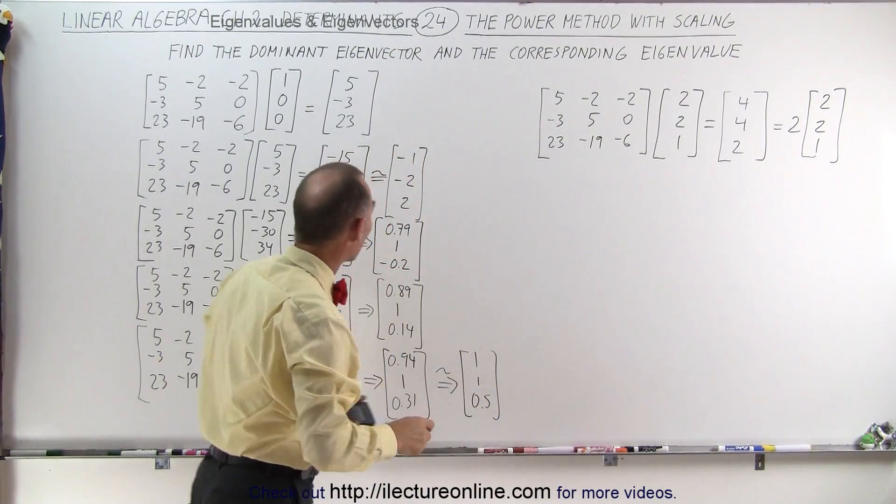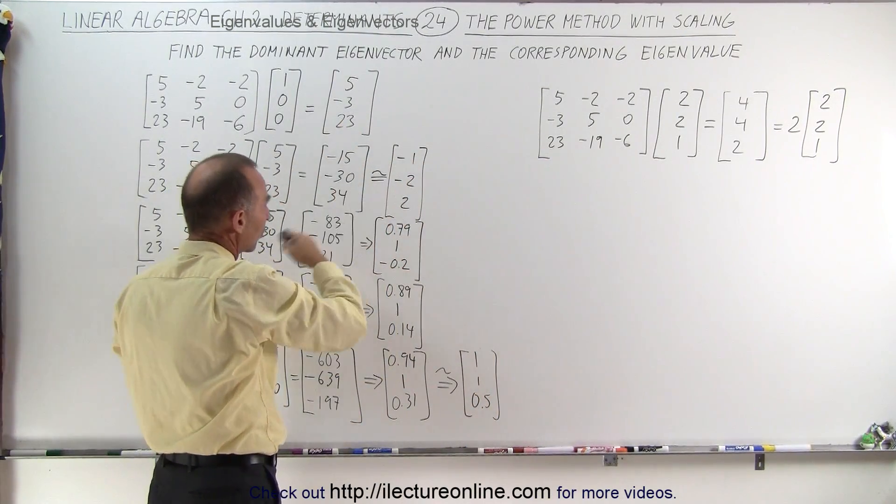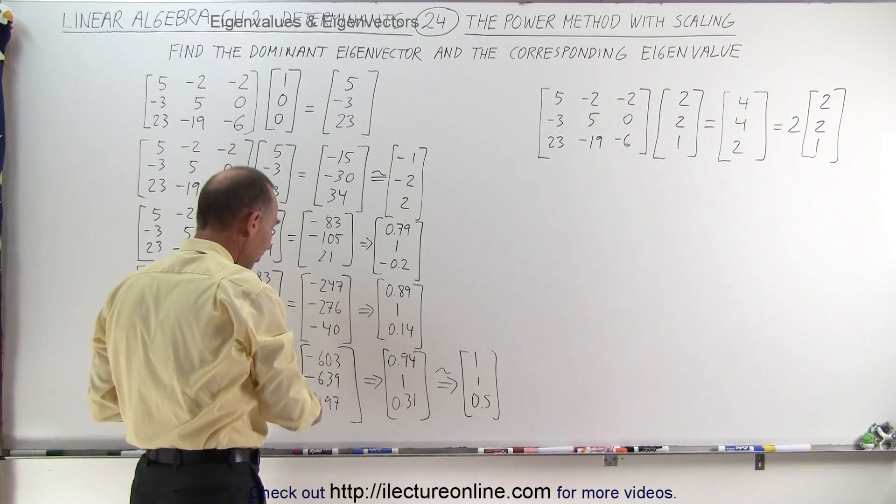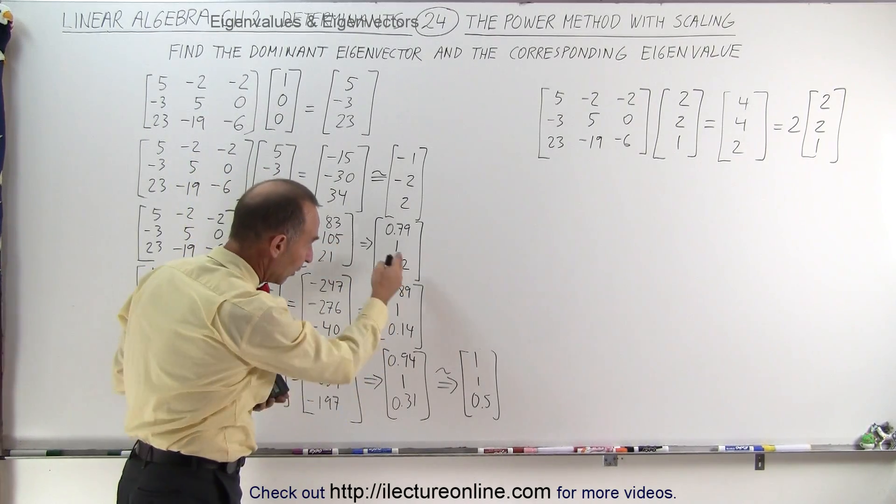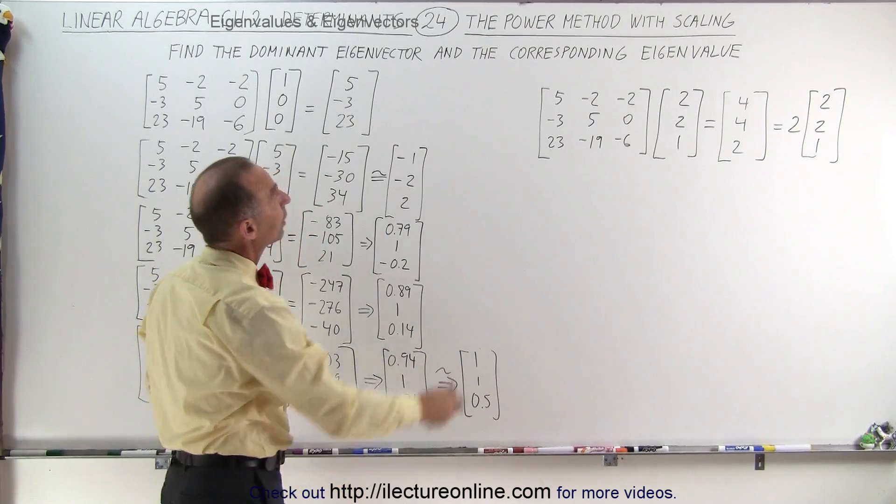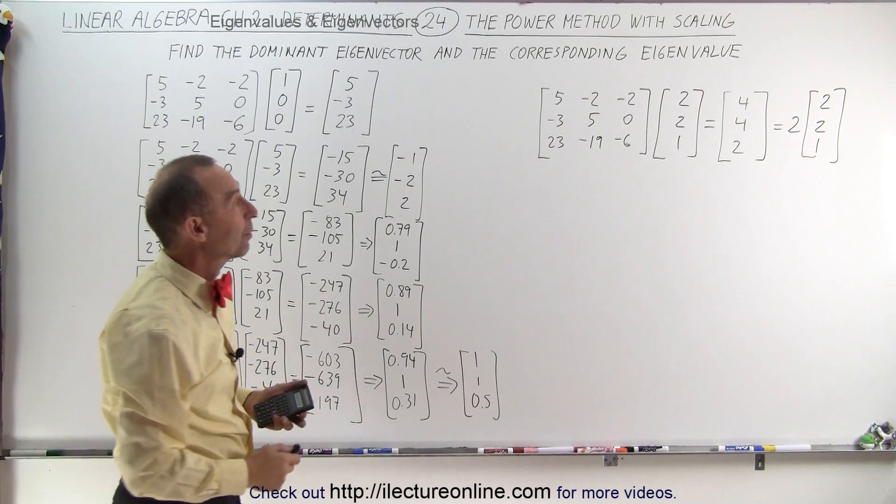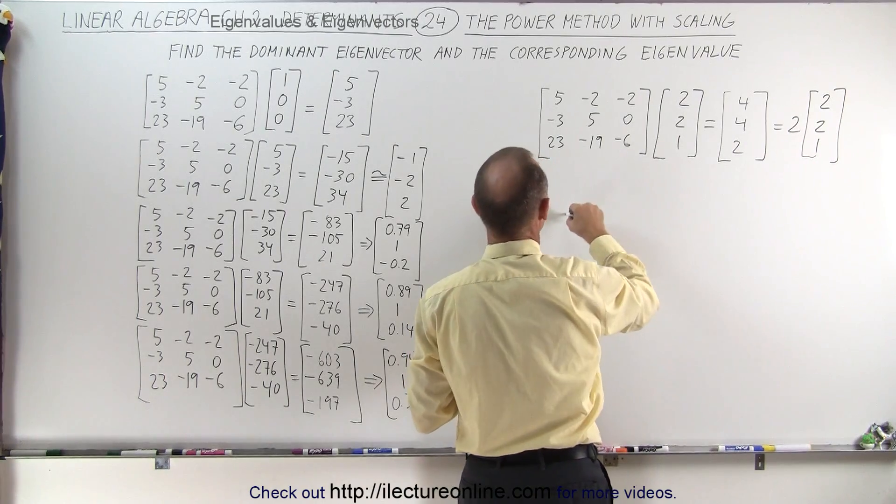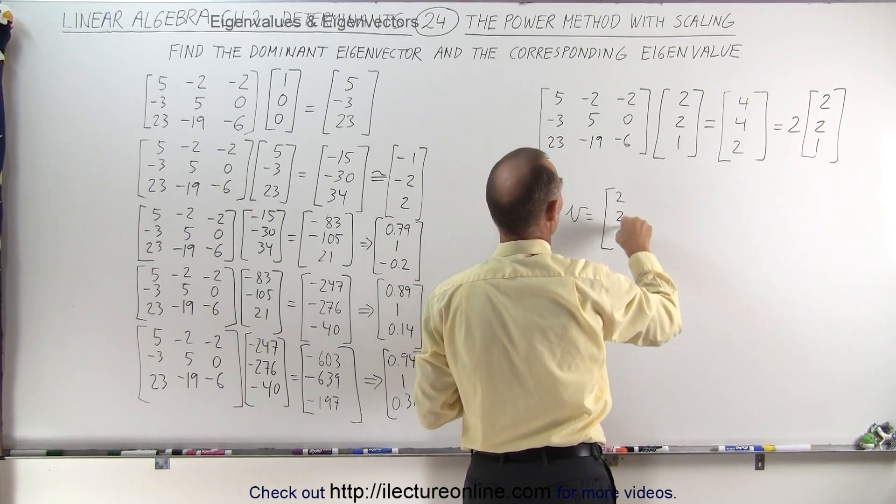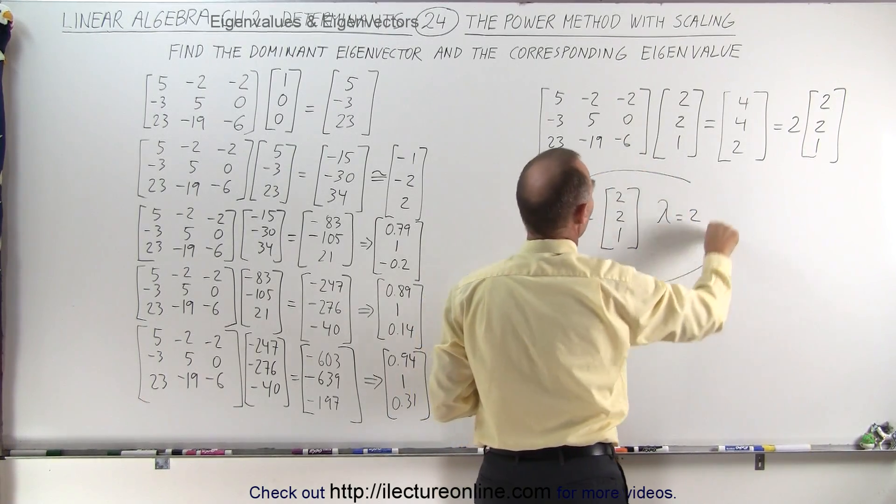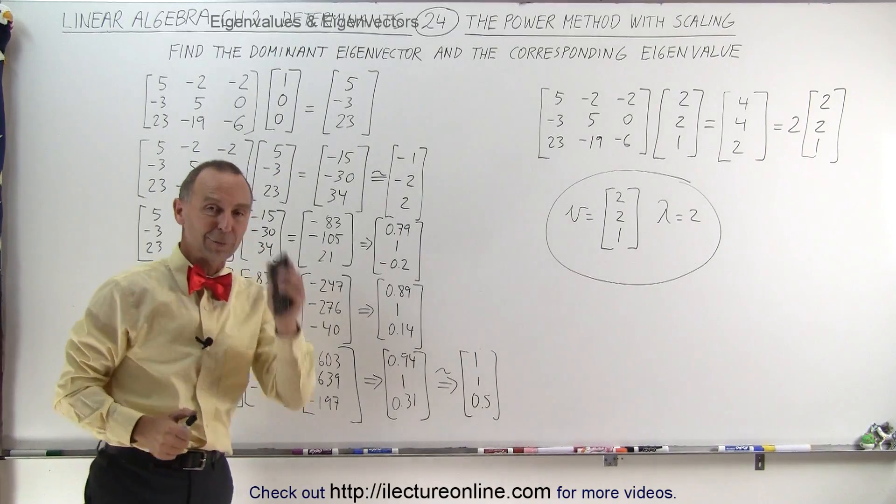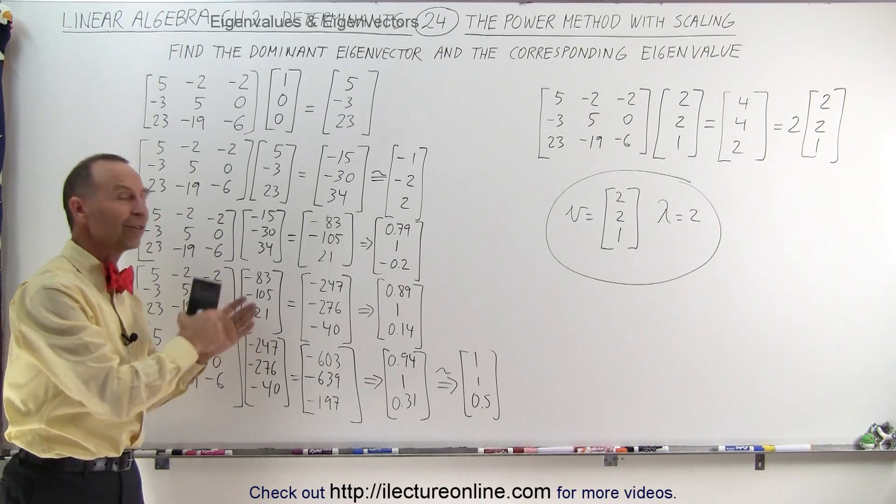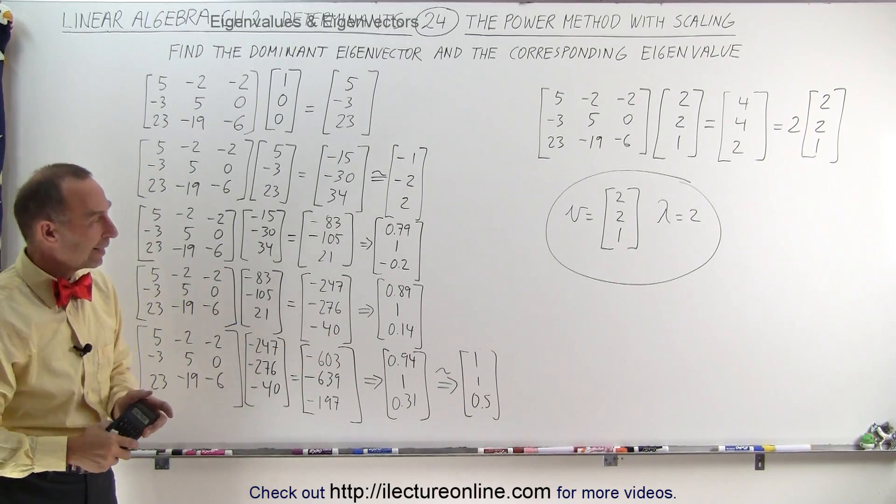At first, it really didn't look like it was going to converge, especially when the signs of the numbers were toggling back and forth. It went from plus minus plus to minus minus plus to all minuses. Then it remained all minuses. And then the numbers began to convert to a 2 to 1 ratio, again using that scaling methodology. And then finally, we realized that, yes indeed, the vector is 2 to 1 and the corresponding eigenvalue is 2. The eigenvector equals 2 to 2 to 1 and the corresponding eigenvalue is equal to 2. And that's the fruits of our labor, of course, with the help of a calculator. And that's how we use the power method and scaling to as quickly as possible converge to the proper eigenvector. And that's how it's done.